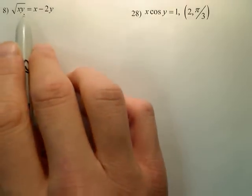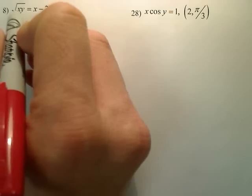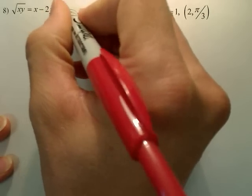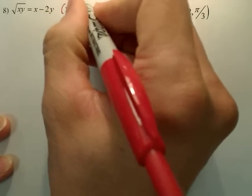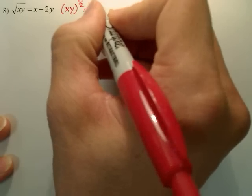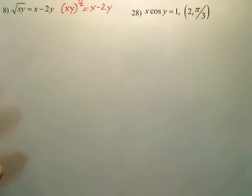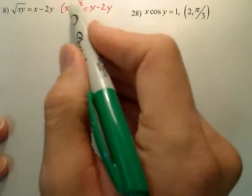In order to derive this implicitly, the first thing I want to do is change this to be xy to the 1/2 equals x minus 2y. I always like changing it to be a half power.